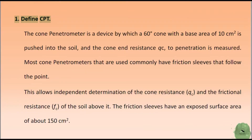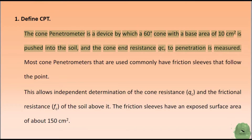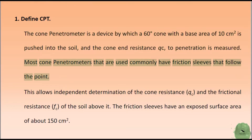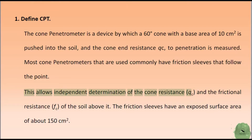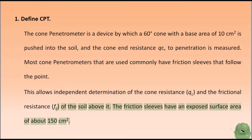Define CPT. The cone penetrometer is a device by which a 60-degree cone with a base area of 10 cm² is pushed into the soil, and the cone end resistance QC to penetration is measured. Most cone penetrometers used commonly have friction sleeves that follow the point, allowing independent determination of the cone resistance QC and the frictional resistance FC of the soil above it. The friction sleeves have an exposed surface area of about 150 cm².